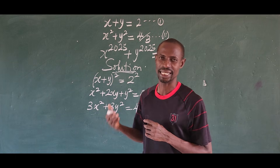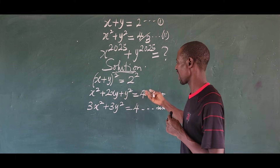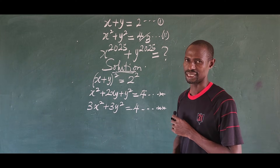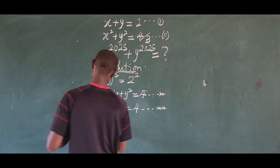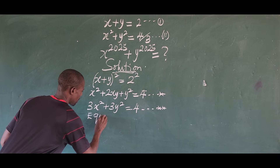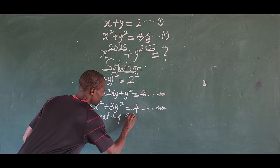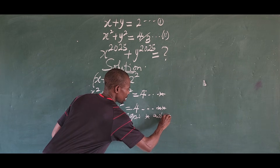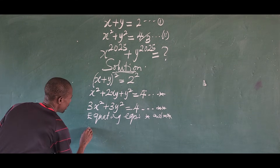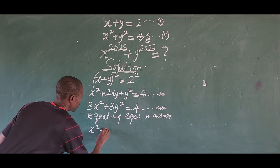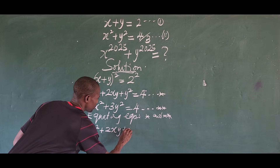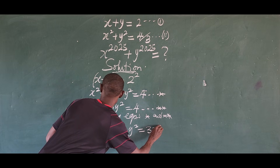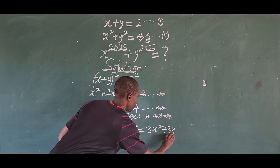Looking at equation star and equation star-star: the squared equation gives us x squared plus 2xy plus y squared equal to 4, and equation star-star gives us 3x squared plus 3y squared equal to 4. Since both equal 4, we can equate them: x squared plus 2xy plus y squared equals 3x squared plus 3y squared.